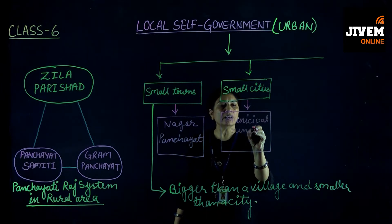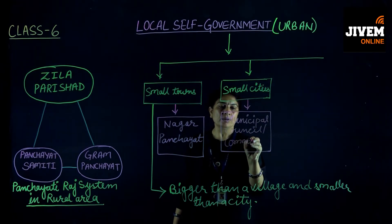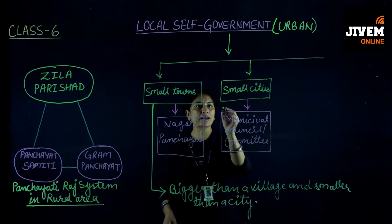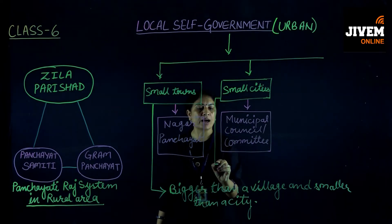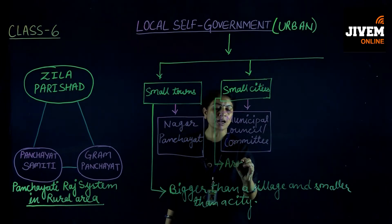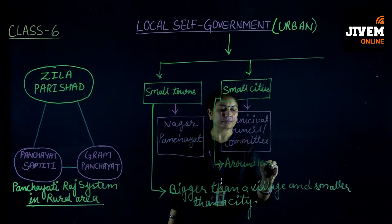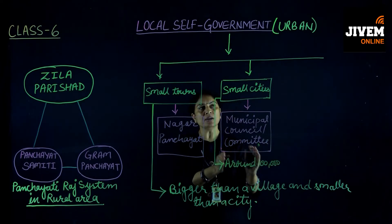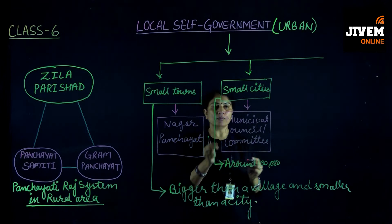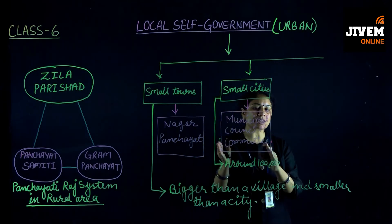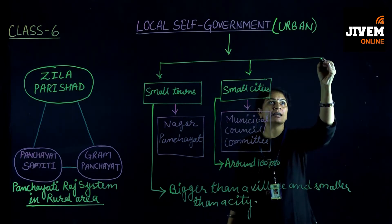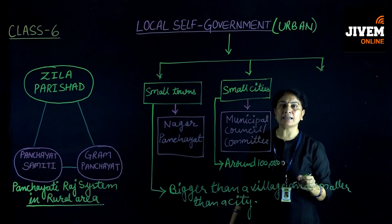Both the Municipal Council and Municipal Committee work in small cities. If we look at what small cities are in terms of population, the starting population is around one lakh. From this population level we begin to consider an area a small city, for which the Municipal Council or Municipal Committee is constituted.